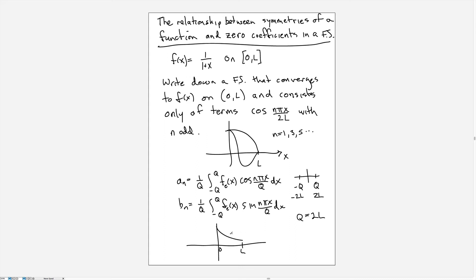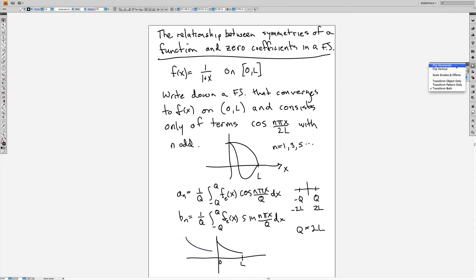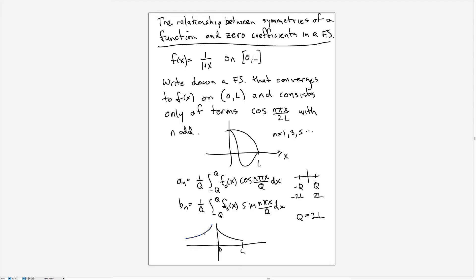This is our original function f of x defined from 0 to L. If we define the extended function to be an even function across the origin like this, then the integral from minus L to L—eventually it'll be 2L—of this extended function is even. But when we multiply it by an odd function, the product of an even function and an odd function will be an odd function, and an odd function integrated symmetrically about the origin will give us 0. So as soon as we extend this as an even function we know that the b_n's will be equal to 0.